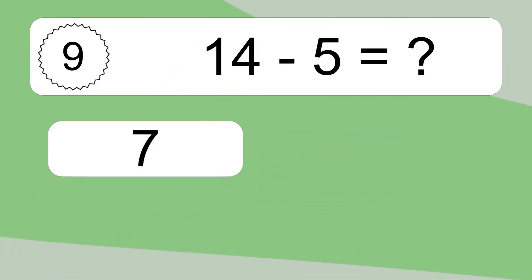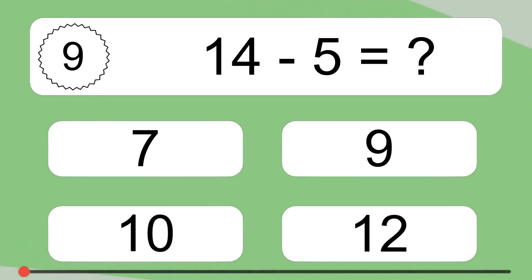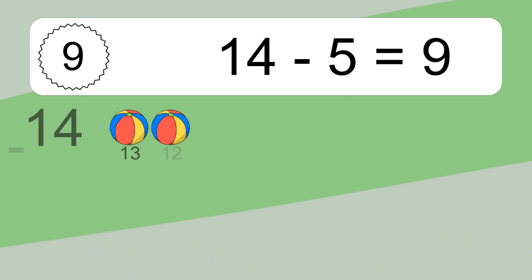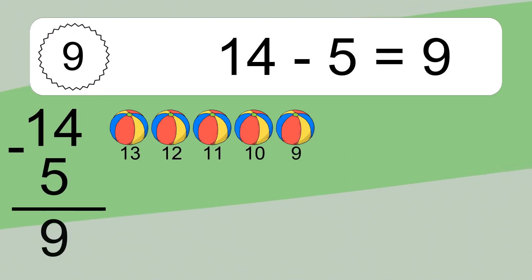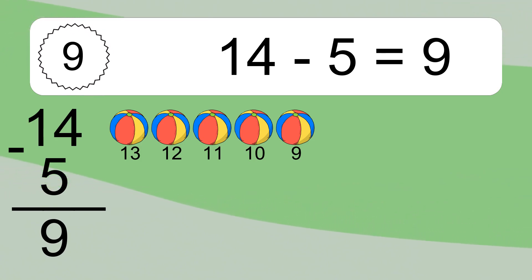14 minus 5 equals what? 14 minus 5 equals 9. Let's count it: 13, 12, 11, 10, 9.